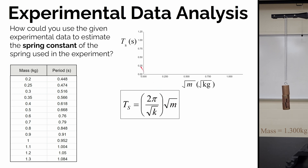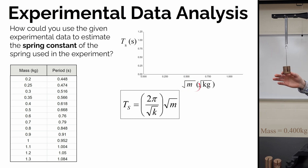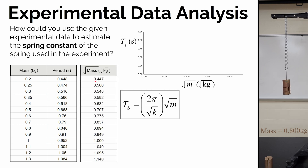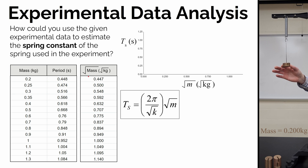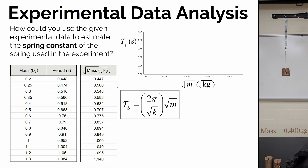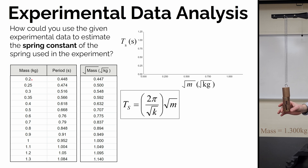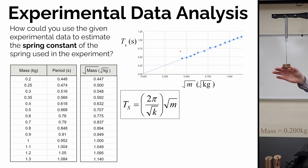To make a period versus square root of mass graph, we need to compute the square root of each mass value and add a new column. For example, the square root of 0.2 kg is 0.447, the square root of 1 kg is 1, and so on — with units of √kg. Here's what the data looks like when plotted on axes, and it should look linear if we did everything right — and in this case it does.